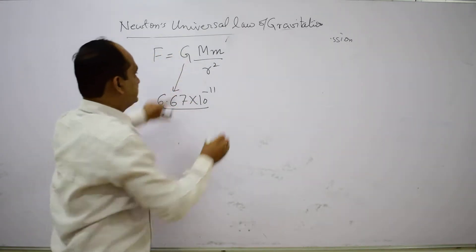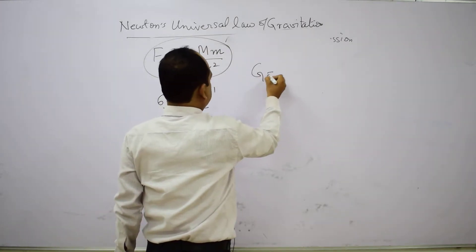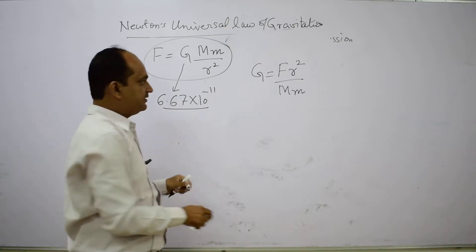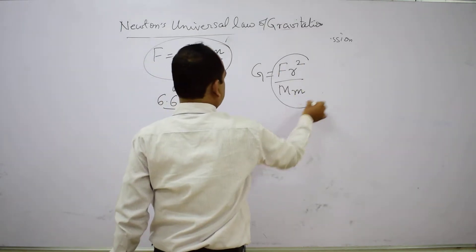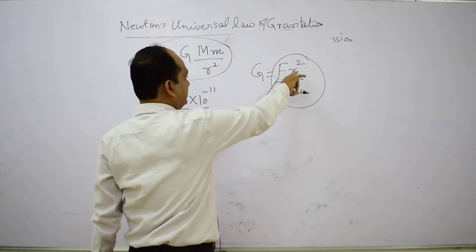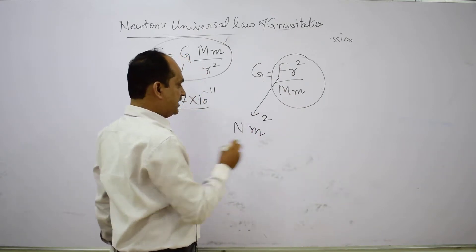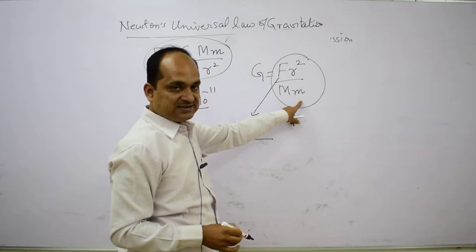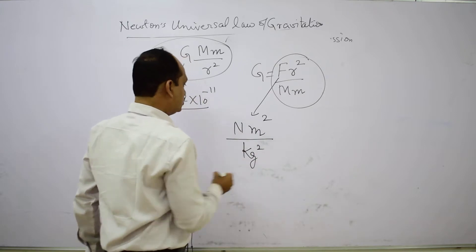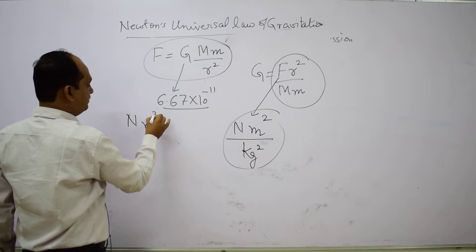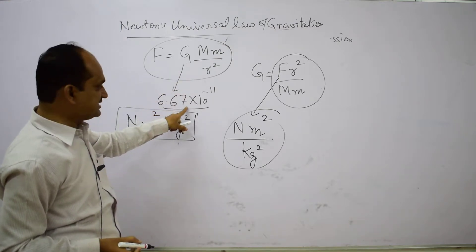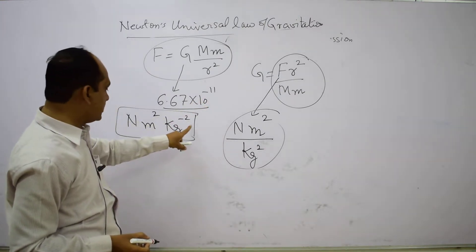To find the unit of G, we rearrange the formula as G equals F R square divided by M times m. The unit of force is Newton, R is distance so R square gives meter square, and in the denominator we have two masses giving kg square. Therefore the unit of G is Newton meter square per kg square, and the complete value of G is 6.67 times 10 to the power minus 11 Newton meter square per kg square.